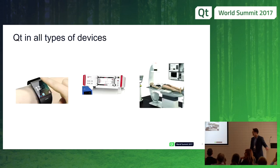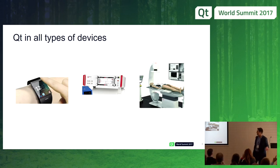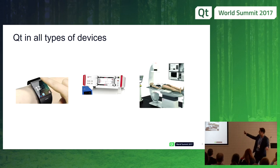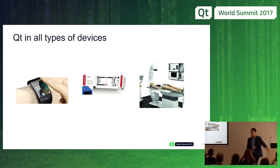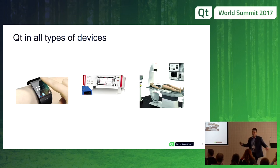Qt is used in all types of devices — from small ones like watches, up to lab equipment like a laser control array device or big medical devices. This is a C-arm device. This is a simulation device, but Qt has also been used in large devices. It's one library that fits different kinds of devices, different kinds of specifications, and different kinds of requirements.